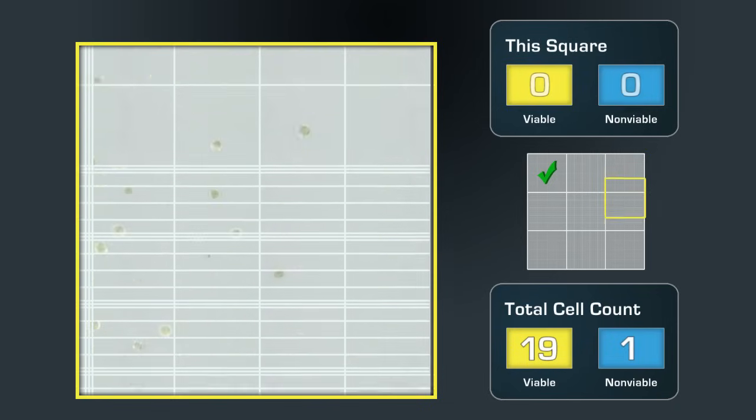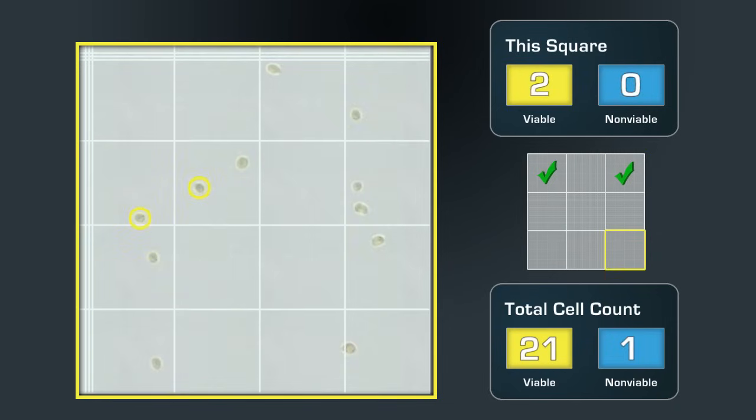Next, let's count the bottom right square. There are 11 viable cells and no non-viable cells.